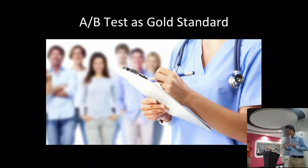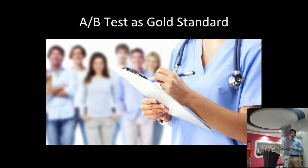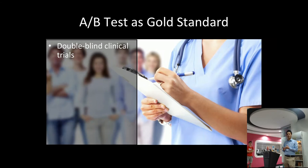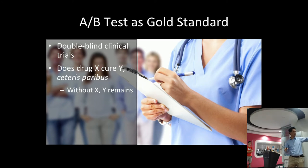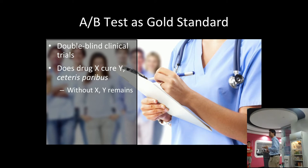So what is causality? A lot of times people say the gold standard in causality are A/B testing on systems or clinical trials — usually double blind clinical trials. If I'm going to test a new drug, I'm not going to tell the nurse administering the drug which one is the placebo — the sugar pill — and which one has the active ingredients. And so if we do this with enough people in two similar groups, one that has the drug and one that has the placebo, then we say X causes Y — ceteris paribus, meaning everything else is controlled for.